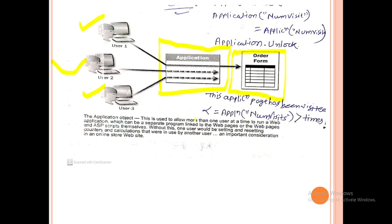The Application object is used to allow more than one user at a time to run the web application, which can be a separate program linked to the web pages and ASP scripts. Without this, one user would be setting and resetting the counter while it is in use by another user. This is an important consideration in online store websites like Amazon.